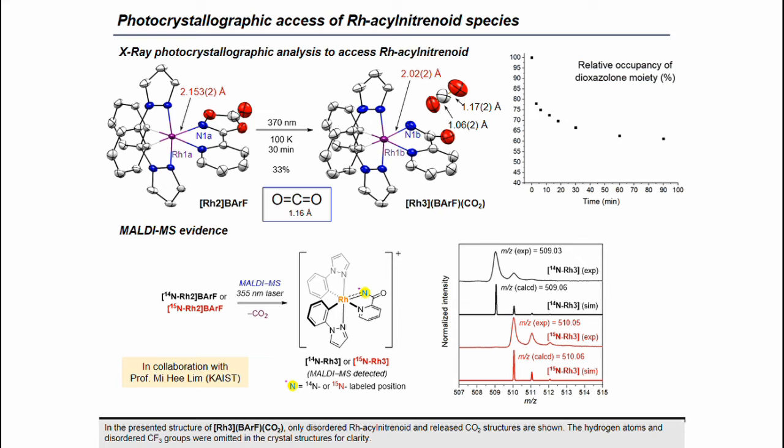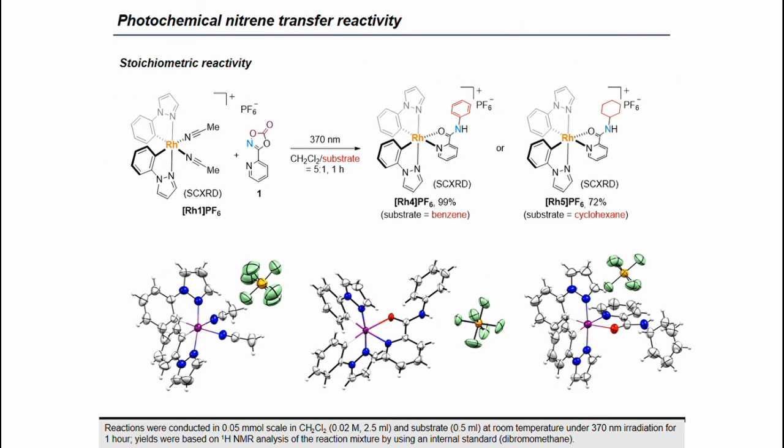In addition to the photocrystallographic analysis, we also conducted a mass spectrometry experiment in collaboration with Professor Mihi Rim at KAIST. Using MALDI mass measurement equipped with 355 nm lasers, we could observe a mass value matching the rhodium acyl nitranoid species. The isotope labeling experiment with a 15N sample gives a one mass unit shifted value, confirming the assignment.